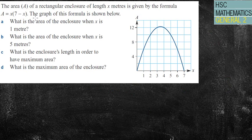The area of a rectangular closure of length x meters is given by the formula A equals x bracket 7 minus x. The graph of this formula is shown below. What is the area of the enclosure when x is 1 meter? It sounds really fancy, but all you're looking at is there's x, there's my area. So, when x equals 1, area equals 6 meters squared. That's it. Pretty straightforward.